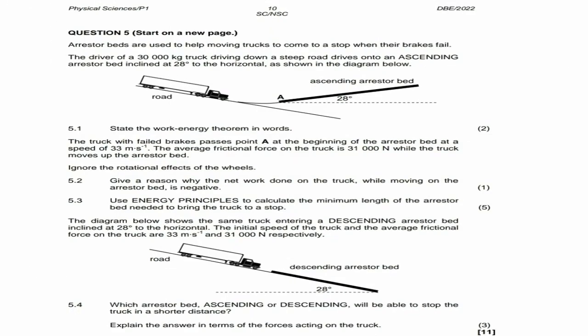The truck with failed brakes passes point A at the beginning of the arrestor bed at a speed of 33 meters per second. The average frictional force on the truck is 31,000 newtons while the truck moves up the arrestor bed. Ignore the rotational effects of the wheels.